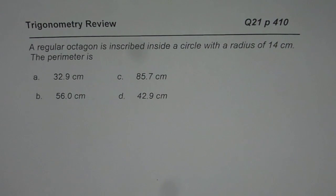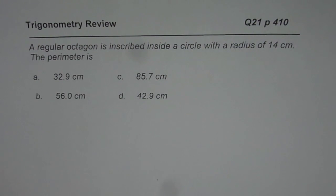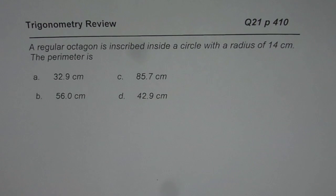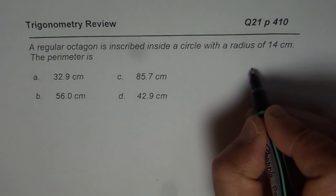Now here we have question number 21, page 410. A regular octagon is inscribed inside a circle with a radius of 14 centimeters. The perimeter is — you are given four choices. You can pause the video, do the calculations, and find the answer. Now how are we going to do it?